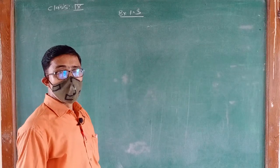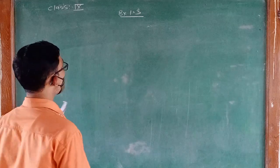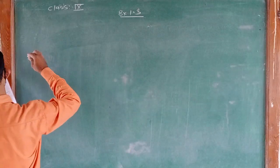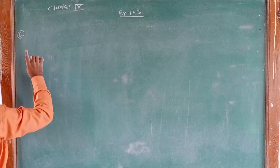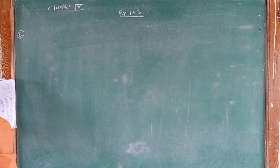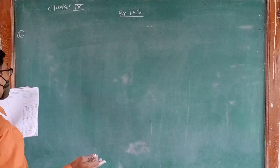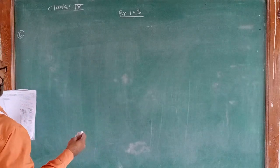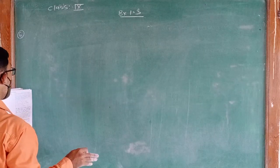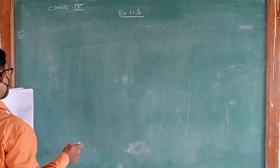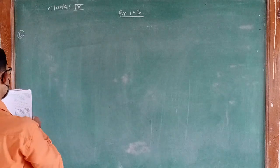Friends, today we have Learning Exercise 1.3, Question number 6. Look at several examples of a rational number in the form of P upon Q, where P and Q are integers with no common factor other than 1, and having terminating decimal representations. Can you guess what property Q must satisfy?